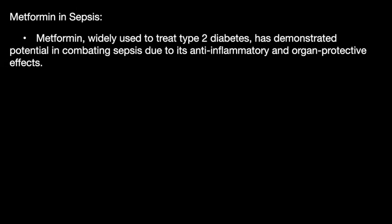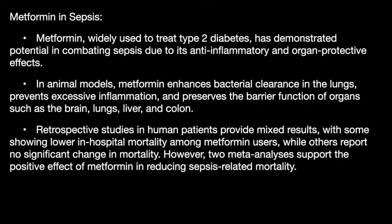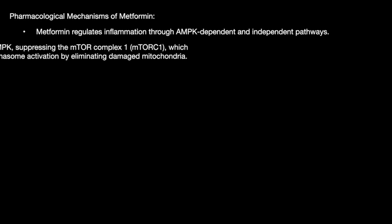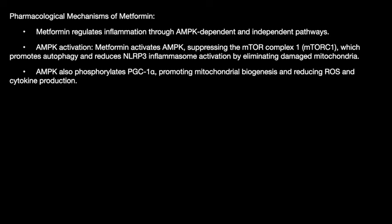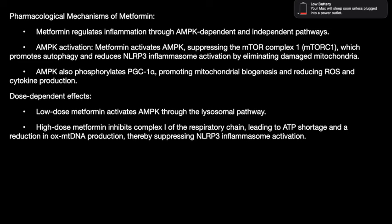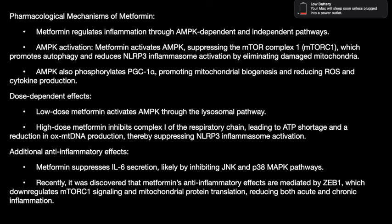Metformin, commonly used for type 2 diabetes, enhances bacterial clearance in the lungs in animal models. Retrospective studies in human patients have shown mixed results for metformin in sepsis, and ongoing trials aim to further assess its role. Its pharmacological mechanism involves regulating inflammation through AMPK-dependent and independent pathways. Metformin activates AMPK and suppresses mTORC1, promoting autophagy and reducing NLRP3 inflammasome activation. AMPK also phosphorylates PGC1-α, promoting mitochondrial biogenesis and reducing reactive oxygen species. There is a dose-dependent effect: low doses activate AMPK through the lysosomal pathway, while high doses inhibit complex 1 of the respiratory chain leading to ATP shortage. Additional anti-inflammatory effects include suppression of interleukin-6, and recently its anti-inflammatory activity has been found to be mediated by ZEB1.